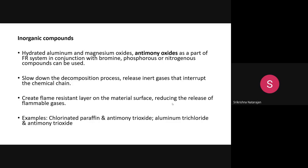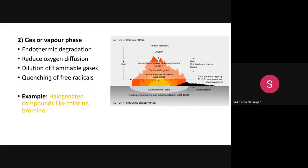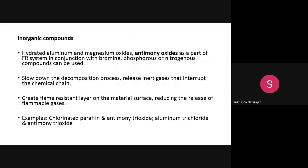Phosphorus-based compounds provide a permanent type of finish because they form a covalent bond — the phosphorus compounds form a cross-link with the cellulose via a covalent bond. Similarly, chemicals like chlorine or bromine also give a permanent finish which will be durable to 15 to 20 washes.